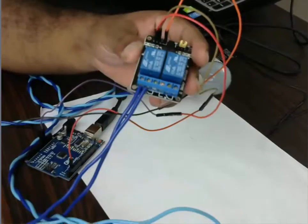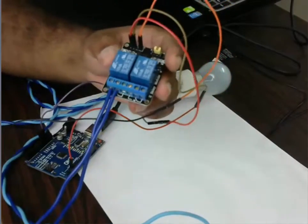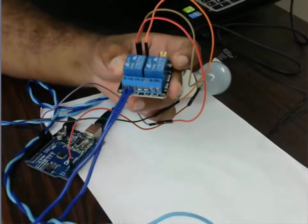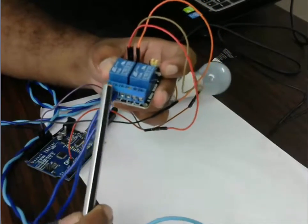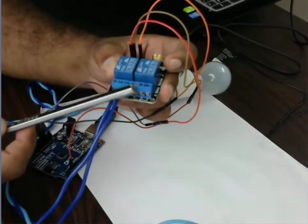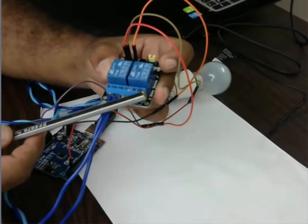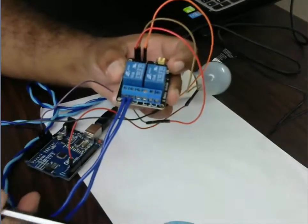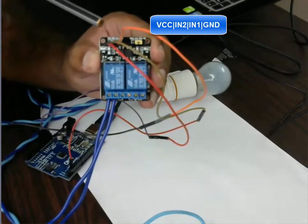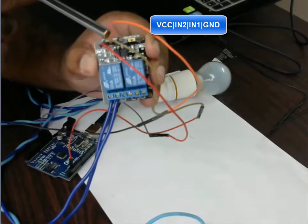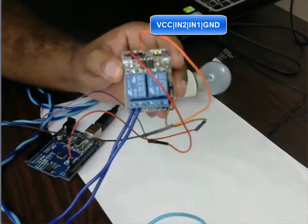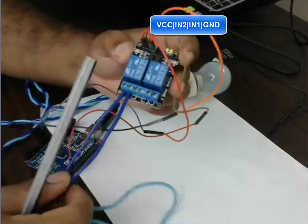Okay, so this is our relay here. We have two relays, so you can control two devices at once. These are the three ports for each relay: normally open, common, and normally closed. This is for the device which you want to control. On the other side, we have four pins: VCC, IN2, IN1, and ground.